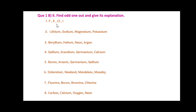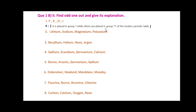The options are F, K, C, L and I. Friends, here K is the odd one out. Since K is placed in Group 1, while others — F, C, L and I — are placed in Group 17 of the modern periodic table.